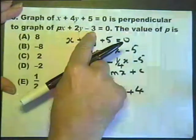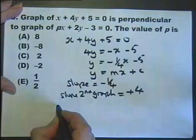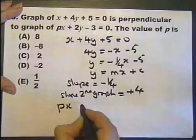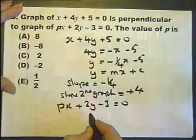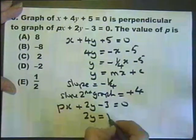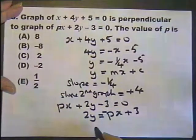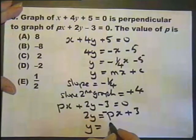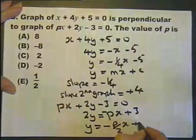Let's now rearrange this graph so it says Y equals. The question does ask us to do that, so I'll do it just to play safe. Let's subtract PX from both sides to get minus PX, then add 3 to both sides. Now I need to divide by 2, so I'll get minus P over 2 — or half of P — plus 3 over 2.